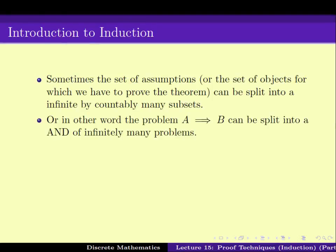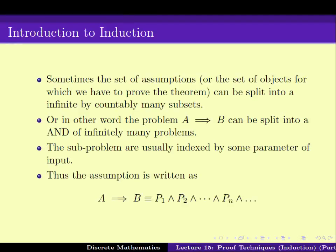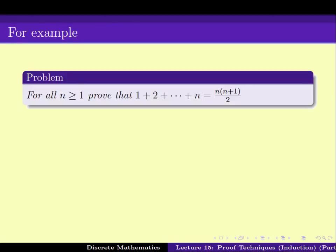But there are times when one can split up the assumptions into infinitely many, but countably many, number of cases. In that case, the problem gets split up into an AND of infinitely many subproblems. These subproblems are parameterized by some parameter of the input. In other words, one would write A implies B as P1 and P2 and so on as an infinite conjunction. So to prove A implies B, one needs to prove that Pi is true for all i.